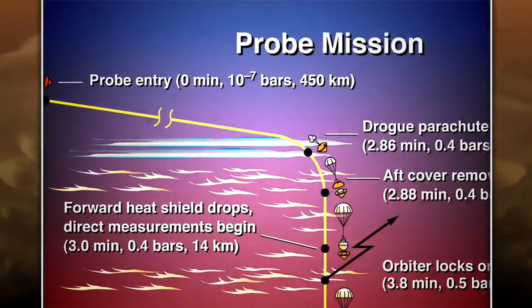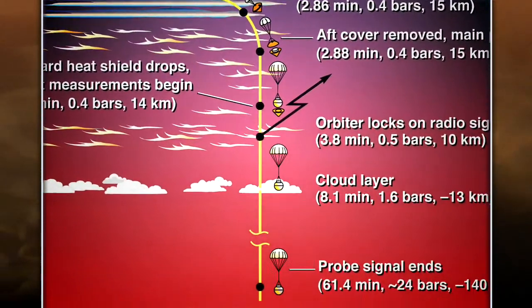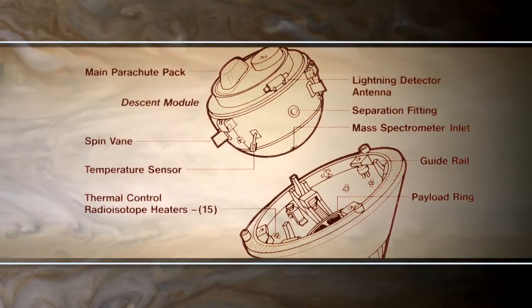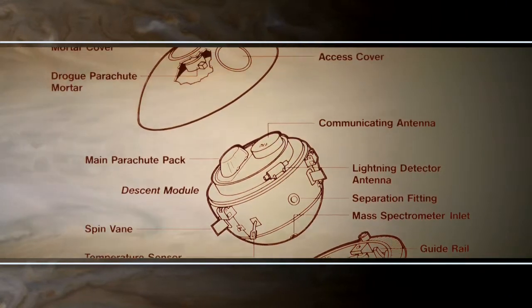In 1995, the spacecraft released a probe that descended into Jupiter's atmosphere, specifically at a hotspot. And this probe made the first in-situ measurements and the only in-situ measurements of Jupiter that exist today.